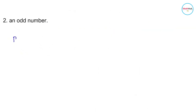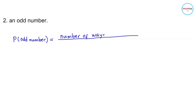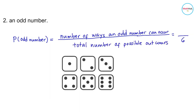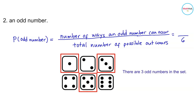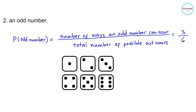Next, let's find the probability of rolling an odd number. This can be computed by finding the number of ways an odd number can occur and dividing it by the total number of possible outcomes, which is 6. Looking at the set of equally likely outcomes, we count the odd numbers: 1, 3, and 5. So there are 3 odd numbers. Therefore, the probability of getting an odd number is 3/6, which reduces to 1/2.